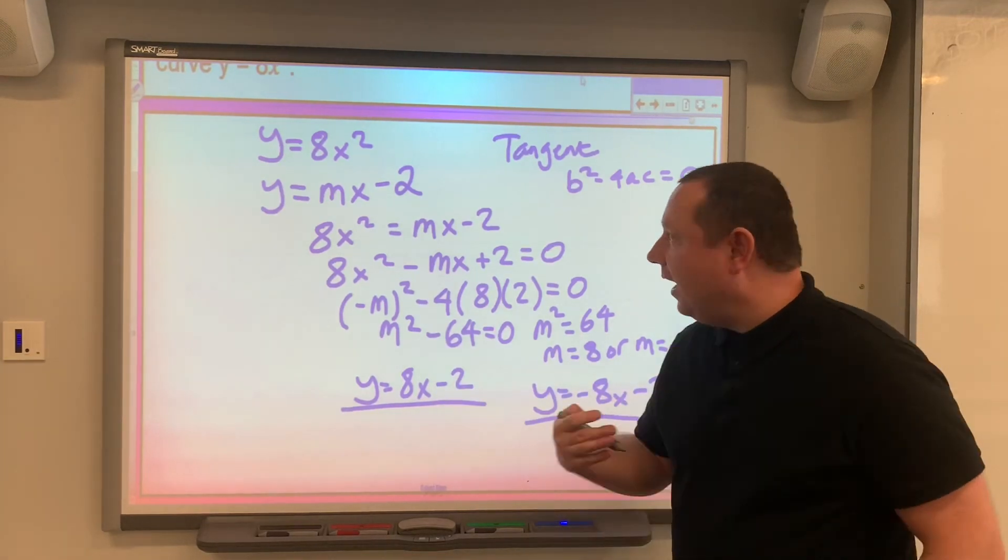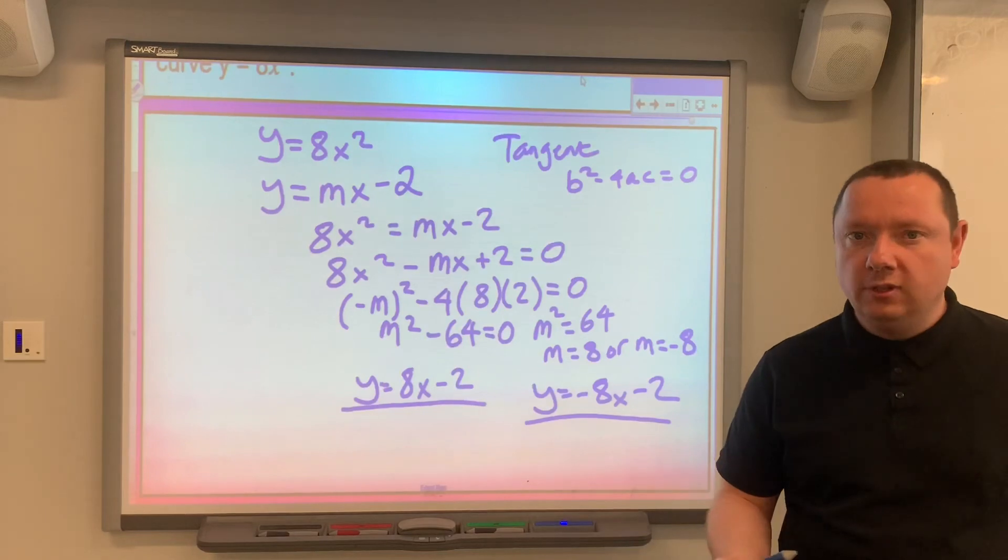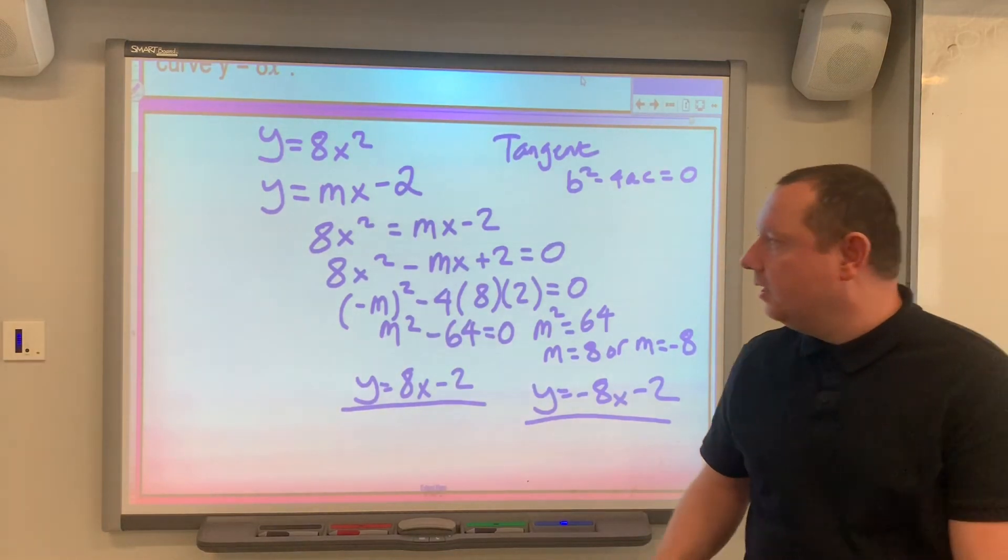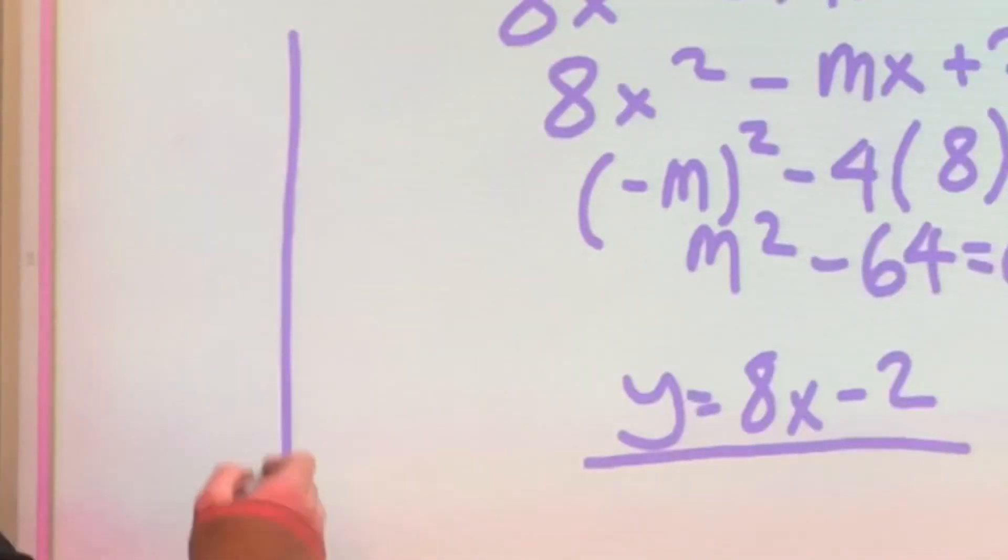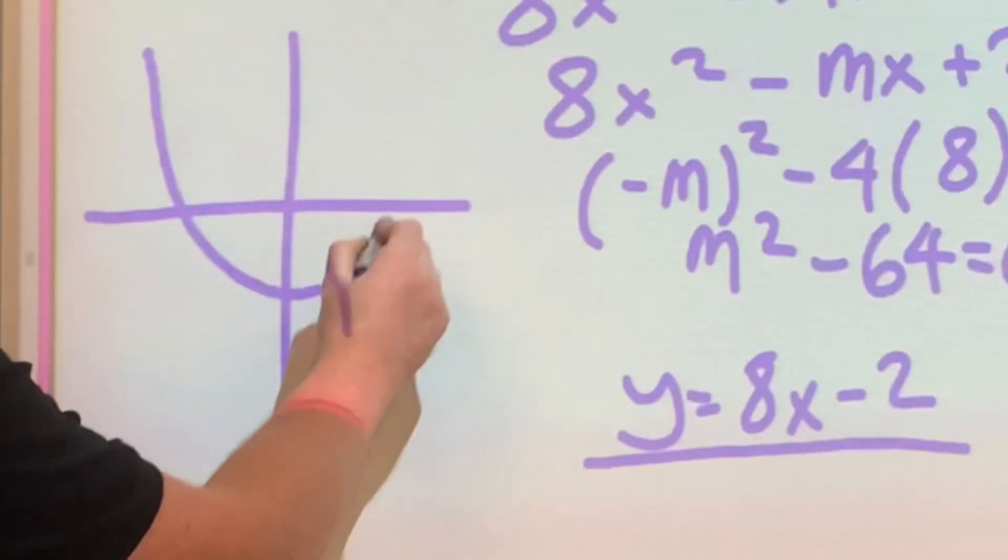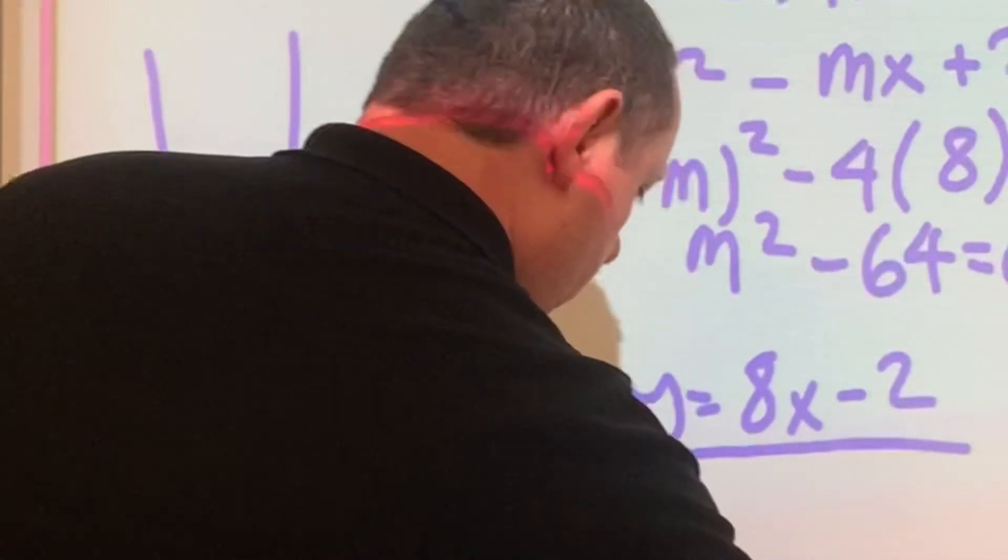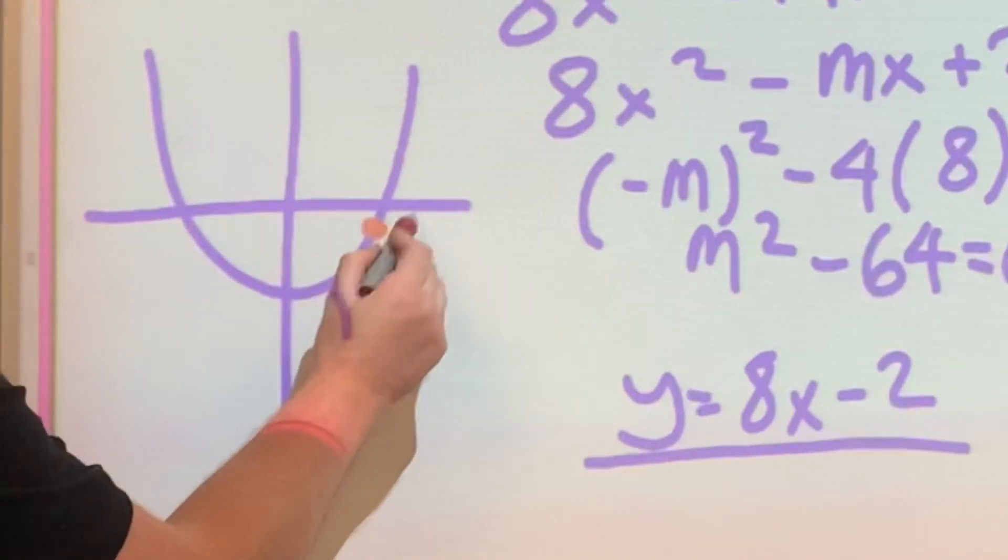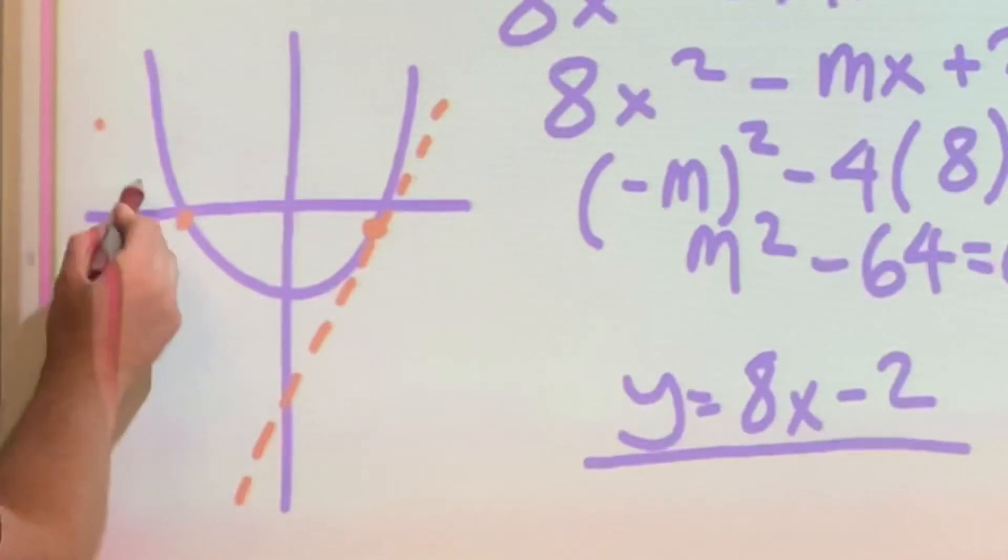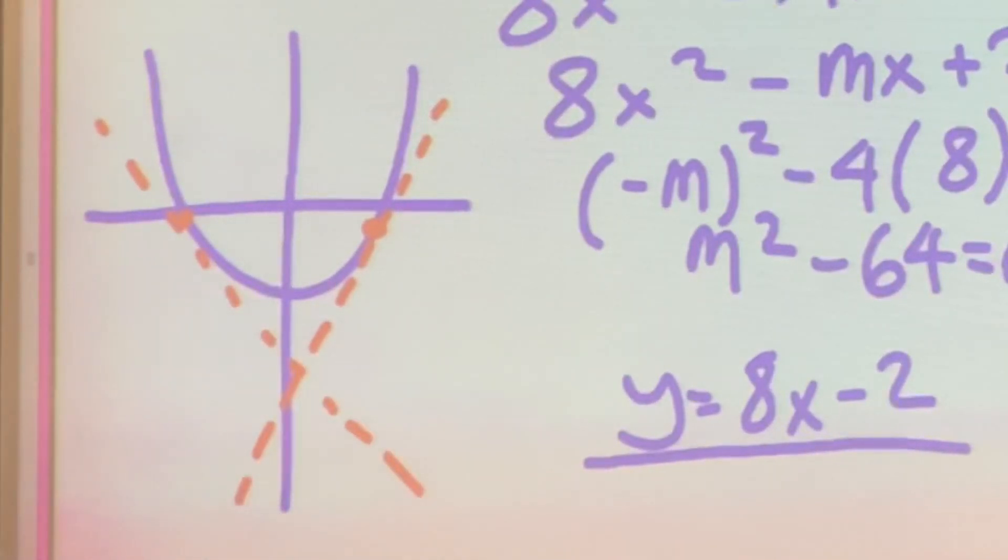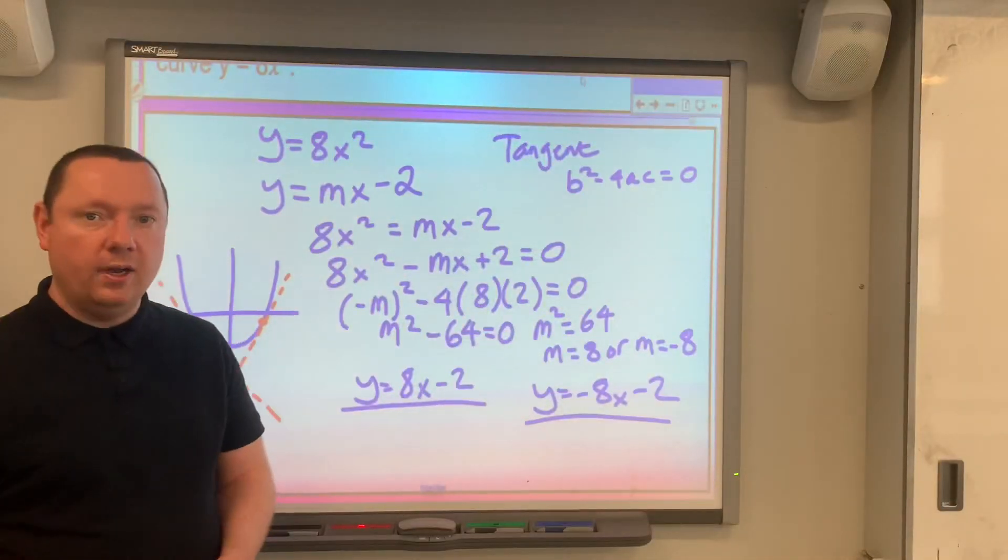And to give you an idea of what that actually looks like, you could have two tangents to a curve. If we draw a simple sketch, this is not to scale or accurate for this question, but if we had a curve like this, we could have one tangent on one side and you could have another tangent on the other side, and you would end up with two tangents to that curve.